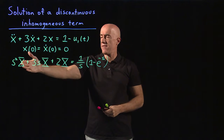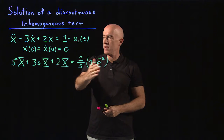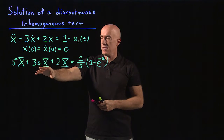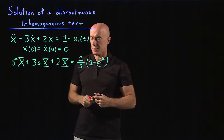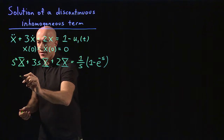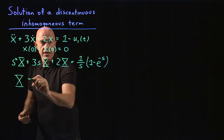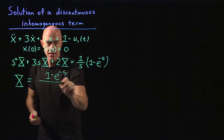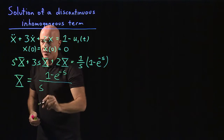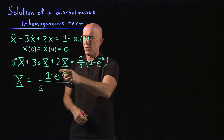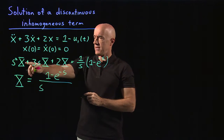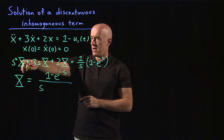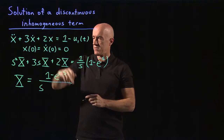Now we have the Laplace transform of the equation. We can factor out X and solve for it. So we get X equals 1 minus e to the minus s, divided by s, all divided by s squared plus 3s plus 2. The denominator s squared plus 3s plus 2 is factorable as s plus 1 times s plus 2.